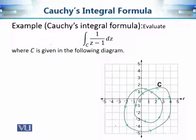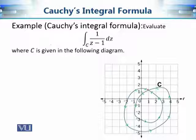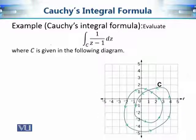Moving on to our next example. The integrand is a simple function, 1/(z minus 1), but the contour is a complicated one. First of all, this contour is not simple because it intersects itself at one point. Nevertheless, if this contour integral is required in some application, we can still use Cauchy's integral formula. To resolve the problem that C is not simply connected, we write C as a union of two contours — taking the inside loop as one contour and the outside loop as another.